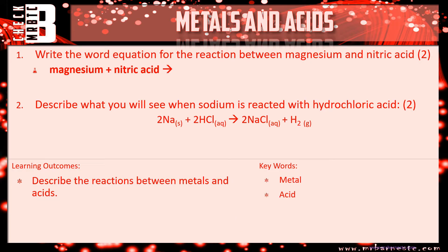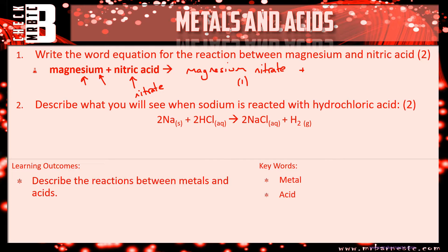Let's go through. Question one: write the word equation for the reaction between magnesium and nitric acid. Take the name of your metal — magnesium — and figure out the ending from your acid. Nitric acid means nitrate. So: magnesium add nitrate to the end gives you magnesium nitrate — that's one mark. The second thing to remember: I've got a metal on its own, no oxide, no carbonate, nothing else, just magnesium. Therefore my byproduct is hydrogen — that's your second mark.